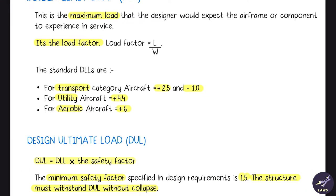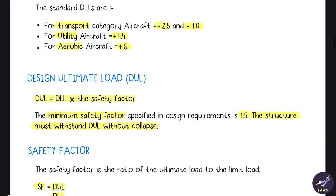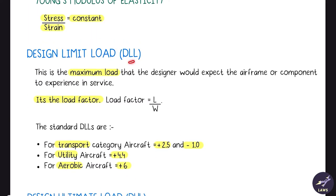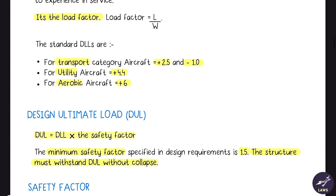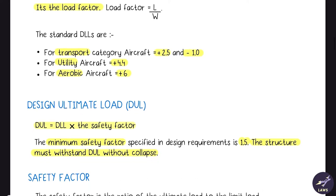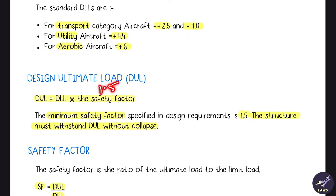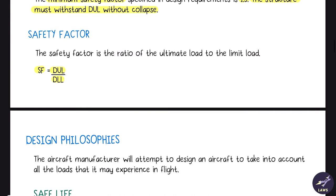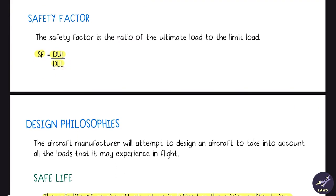Then we have design ultimate load, which is basically design limit load times safety factor. If you cross design limit load, in this case 2.5, structural deformation is a chance. But if you exceed the design ultimate load, divergence is possible. We have seen this in the chapter of limitations, the whole wing rips up. That happens when you cross the DUL. DLL multiplied by 1.5 is your DUL.